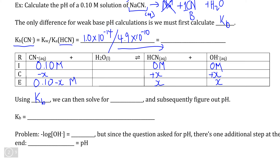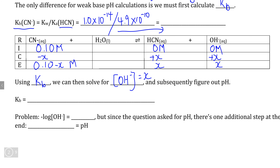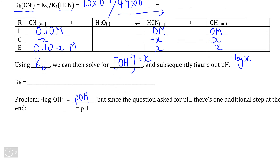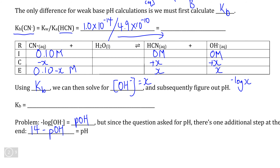So if we use Kb, we can solve for the concentration of hydroxide, which is equal to our X value. If we take the negative log of X, we find our first distinction: the negative log of the concentration of hydroxide gives us pOH, but our question asked for pH rather than pOH. This means we have a final step where we need to take 14 and subtract the pOH to get the pH, but as long as we keep this in mind, it doesn't actually add that much time to the problem.